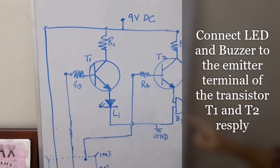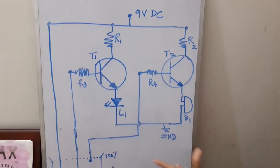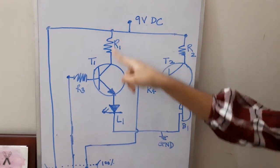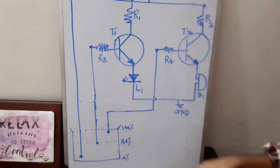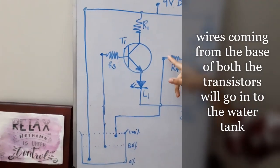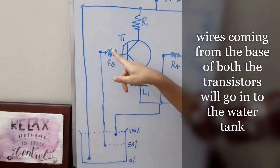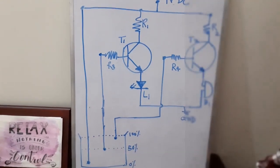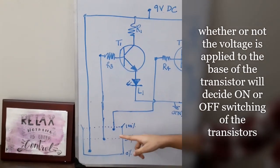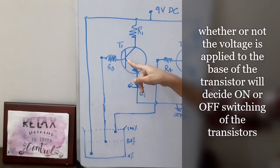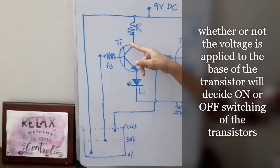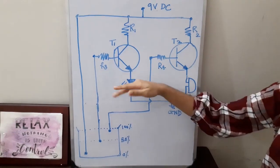And then it is connected to ground so that we complete the circuit. Base of each transistor will get the signal from the water level. Based on the water level signal to the base, the transistor will be in either open or closed condition.